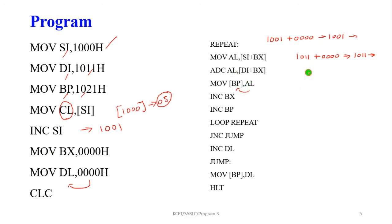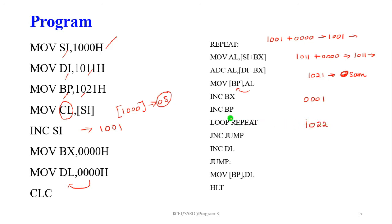The answer is stored in the AL register. This AL value is then moved into the base pointer memory location — for example, memory location 1021. The output sum value is stored at that memory location. Next, increment the BX (byte pointer) value. Then increment the base pointer value. Now check the CL value: if CL is zero, go to the next step; otherwise repeat the loop.